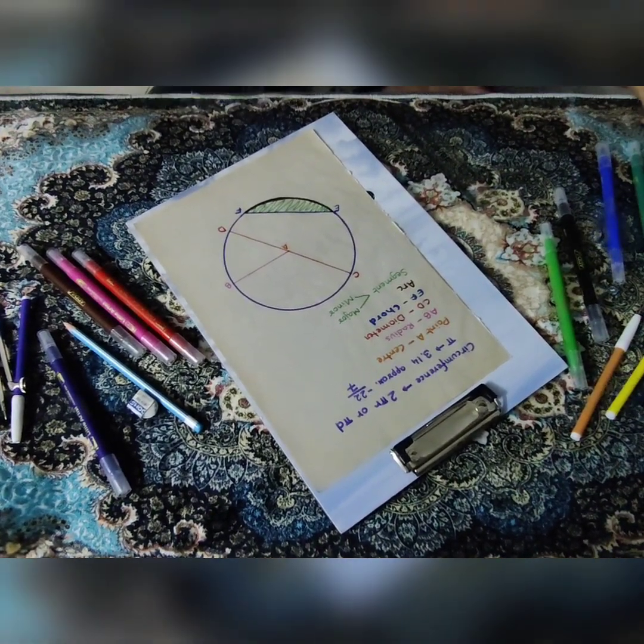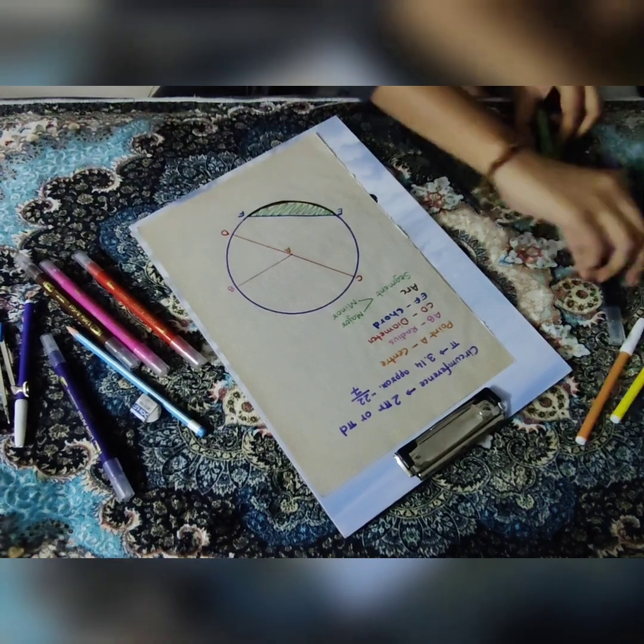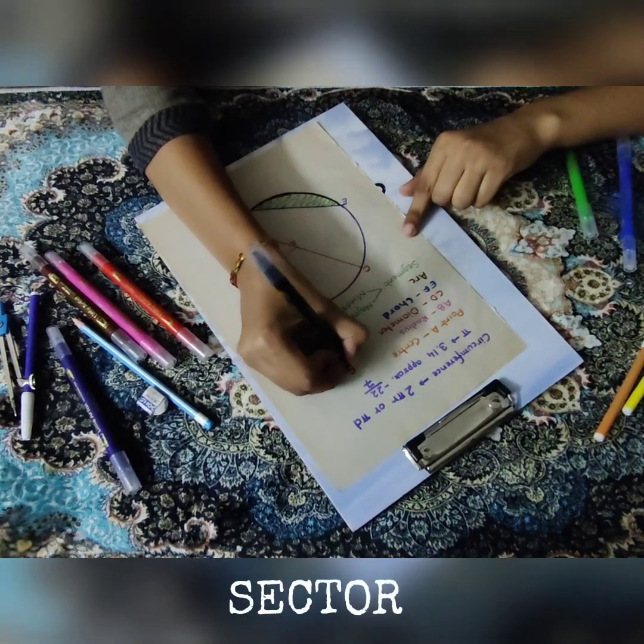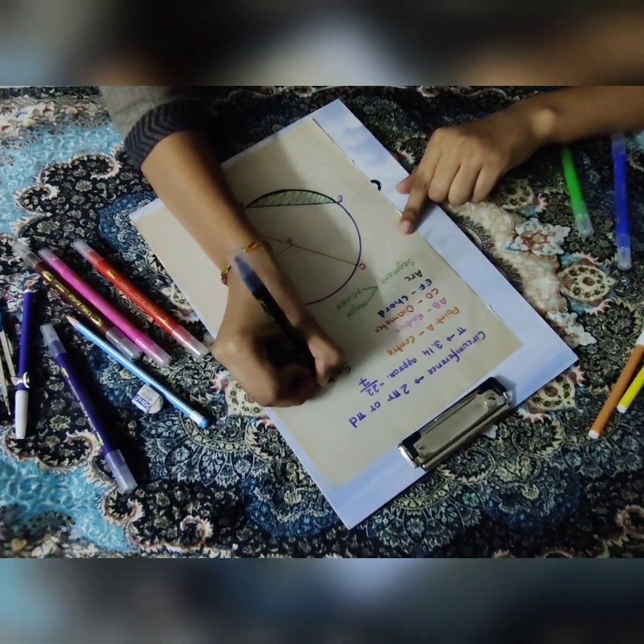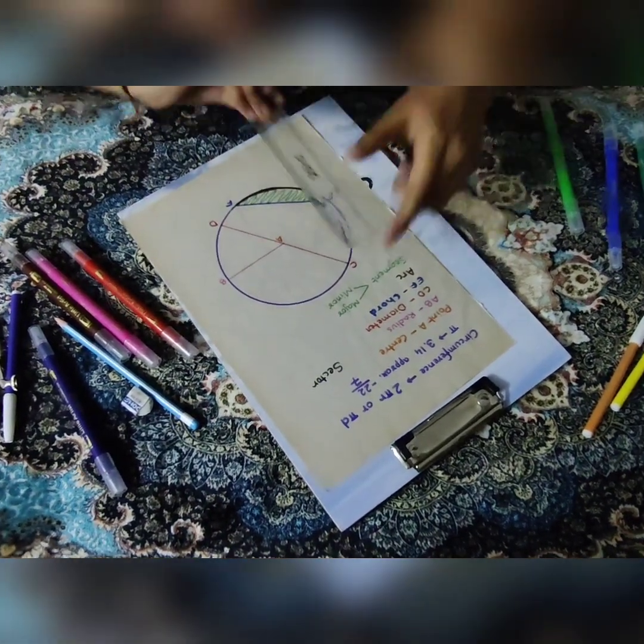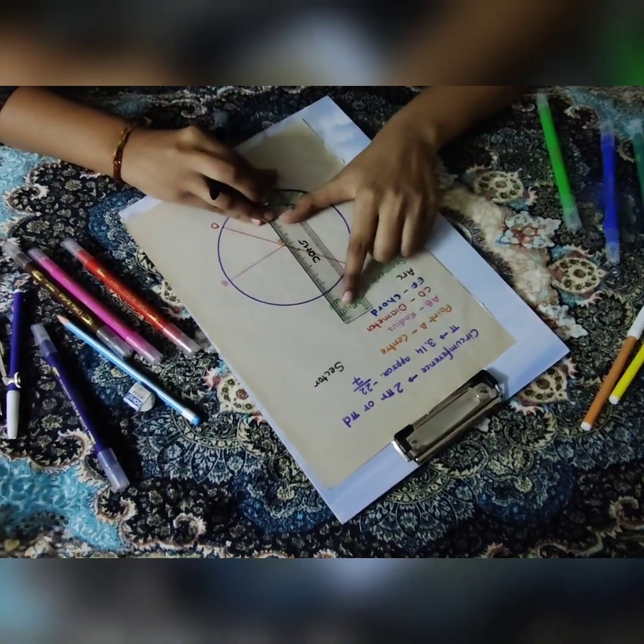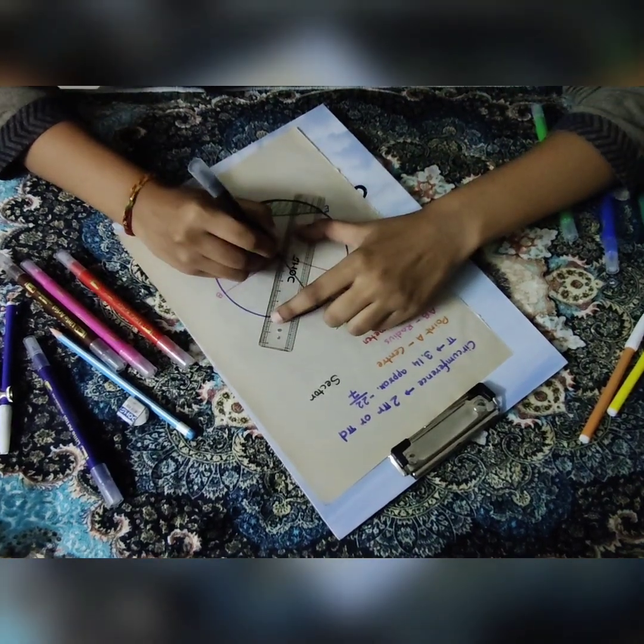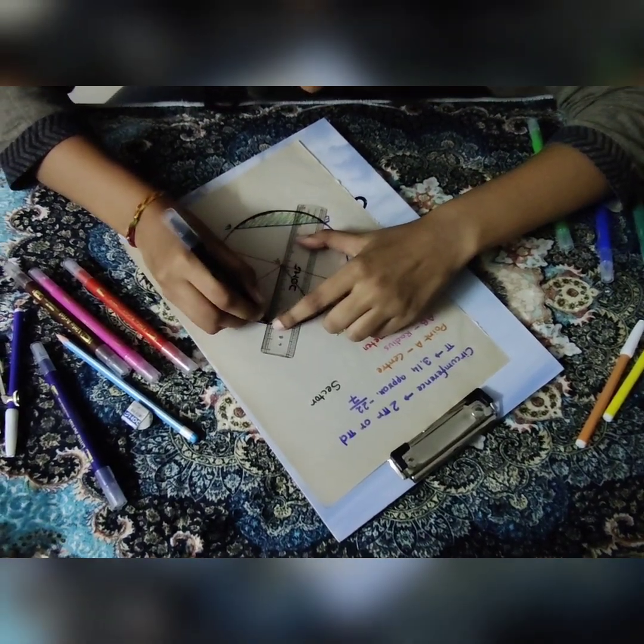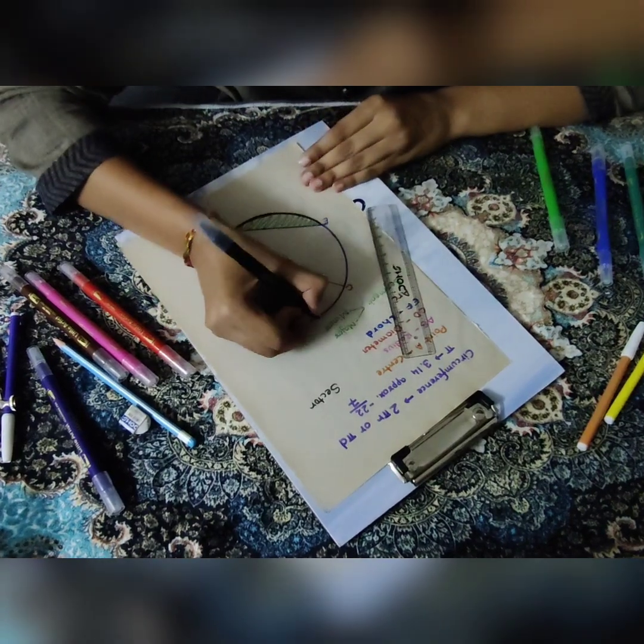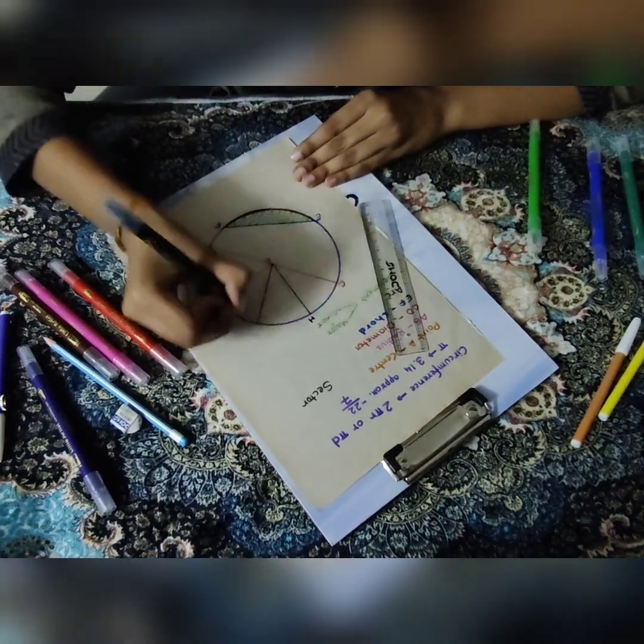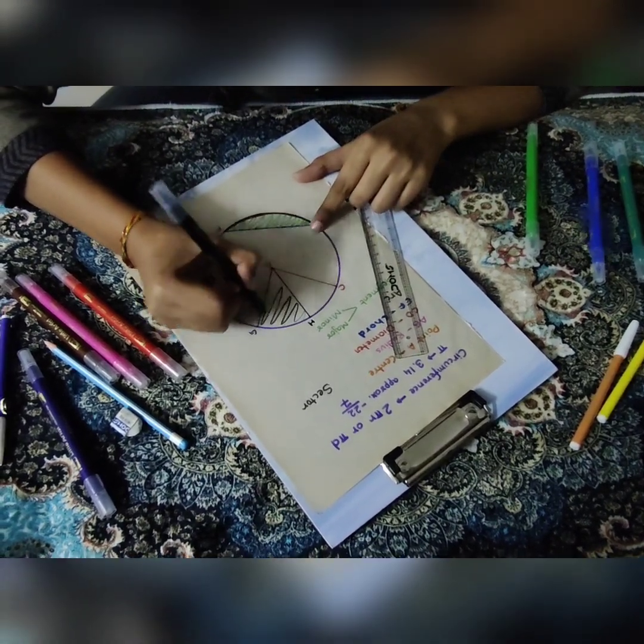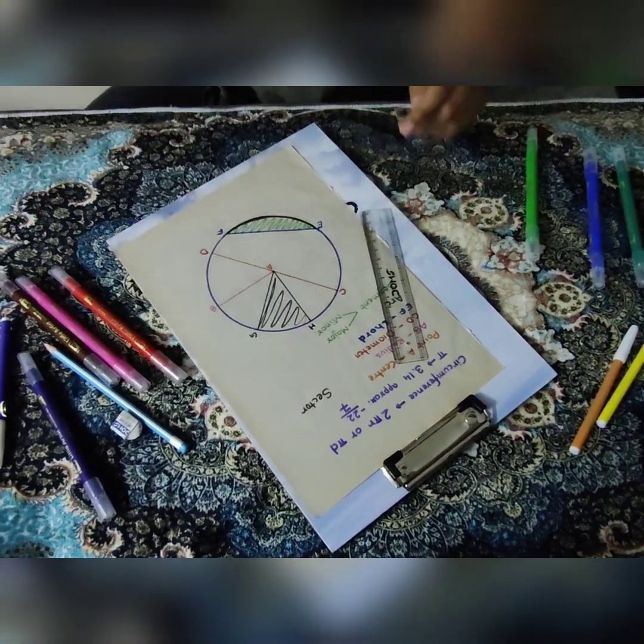The next thing we have is a sector. So sector is basically the area covered between two radiuses and an arc. So these are my two radiuses from point A to point G and H. And the area covered, this whole area is my sector.